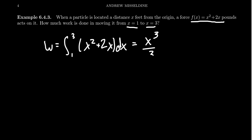we get x cubed over 3 plus x squared as we go from 1 to 3. And that's all there really is to it. Now we just kind of plug and chug.